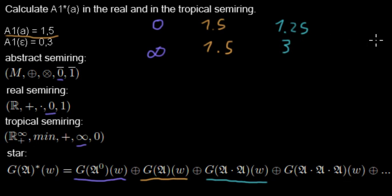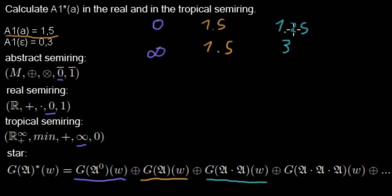For the next weight I have to do the multiplication three times. You can see that each subsequent weight in the sequence will be even lower for the real semi-ring and even higher for the tropical semi-ring.